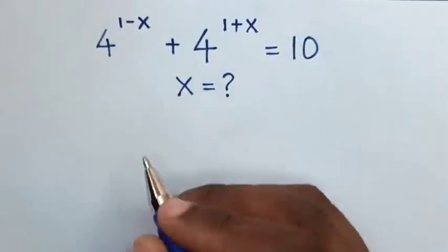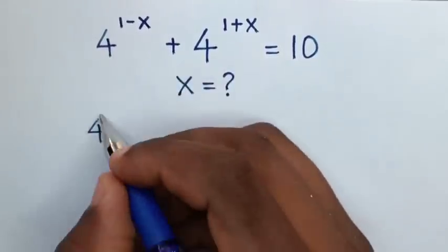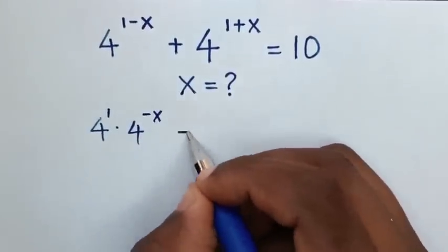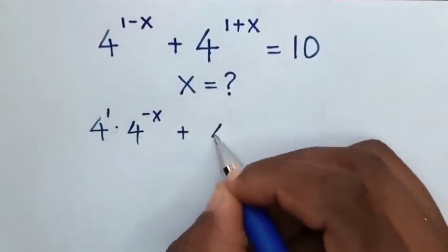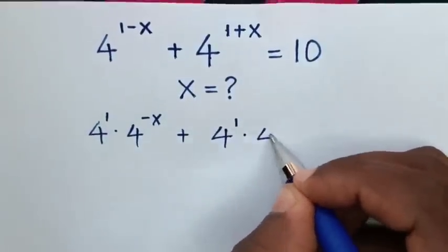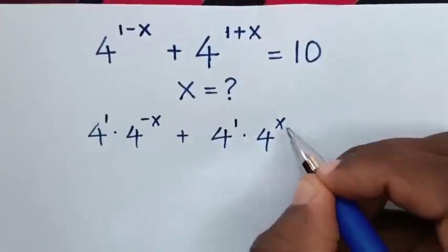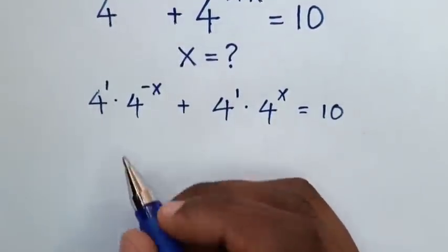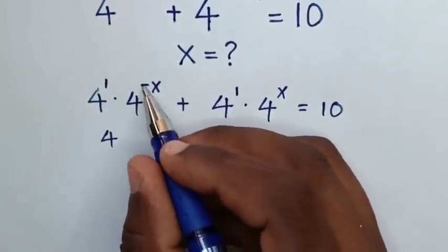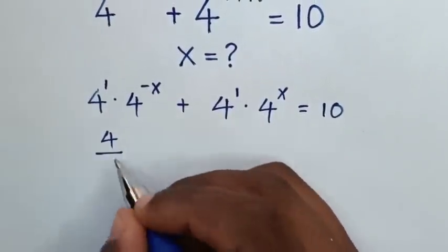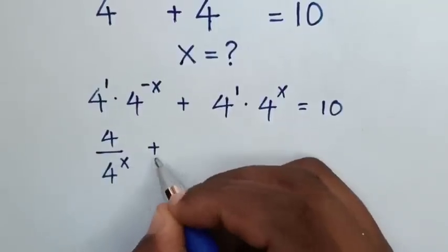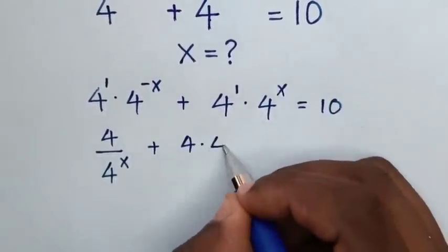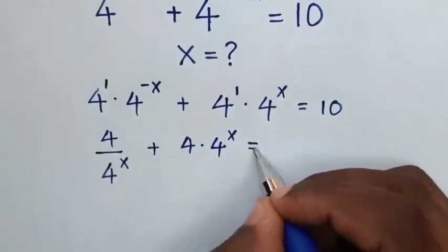First, this exponent 4 power of 1 minus x is the same as 4 power of 1 times 4 power of negative x. Then plus 4 power of 1 plus x is the same as 4 power of 1 times 4 power of x, equal to 10. So 4 power of 1 is 4, and 4 power of negative x is 1 over 4 power of x, plus 4 times 4 power of x equals 10.